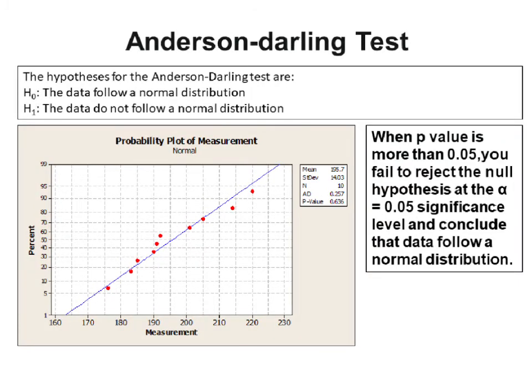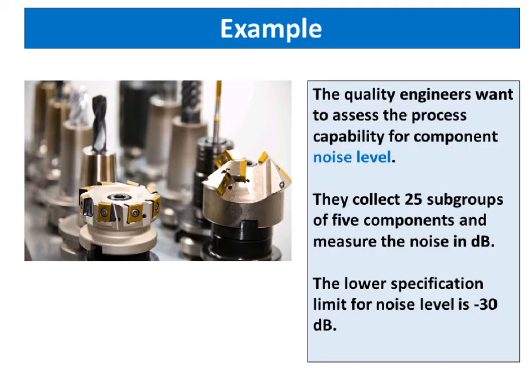It generates a normal probability plot and performs a hypothesis test to examine whether or not the observations follow a normal distribution. When p-value is more than 0.05, you fail to reject the null hypothesis at the alpha equals 0.05 significance level and conclude that data follow a normal distribution. Let's take an example.